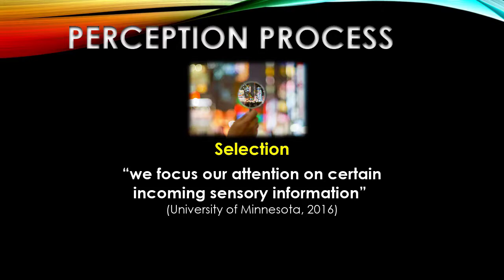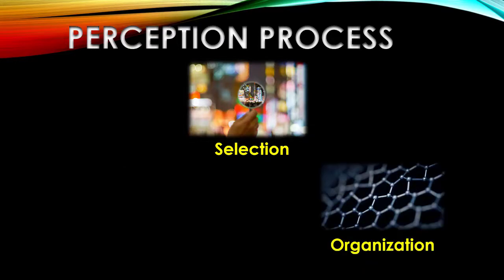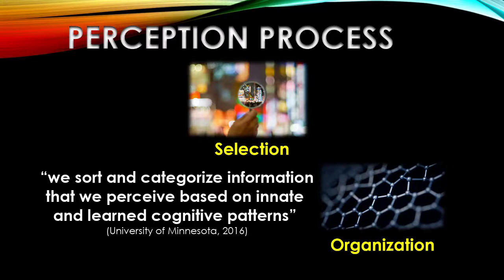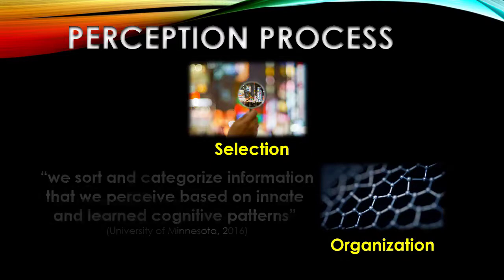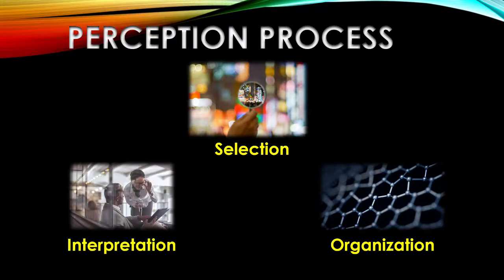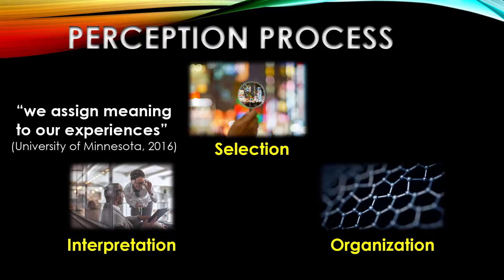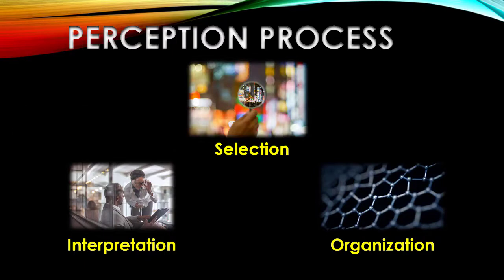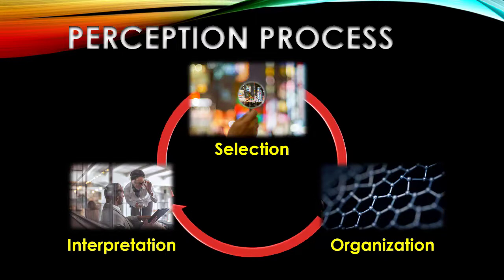So we make some deliberate, principled choices. Once we select the stimuli we're interested in, the next step is organization, where we take all of the information that we've just gathered and we try to categorize it, put it into sequences or aspects of similarity and difference that enable us to try to cohere all of the different information that we're taking in all at the same time. Once we've organized the informational input that we have, the last step is interpretation, where we take all of this information that we've just curated for ourselves and we run it through our cognitive database of various schemata — structures of past perceptions and experiences and knowledge that we use as a basis for making sense of any kind of new experience. And this three-step process of selection, organization, and interpretation is a process that's a cycle, and it's an ongoing one.